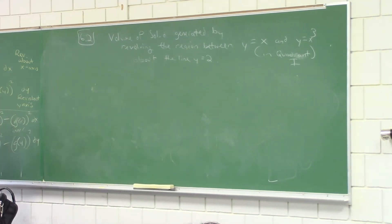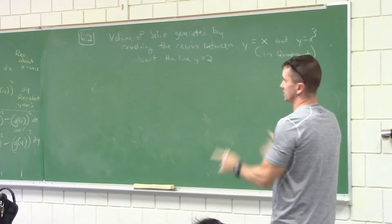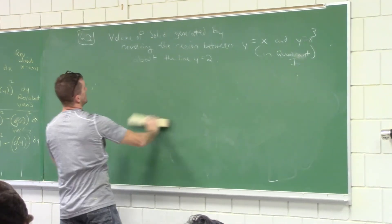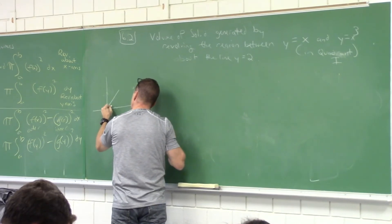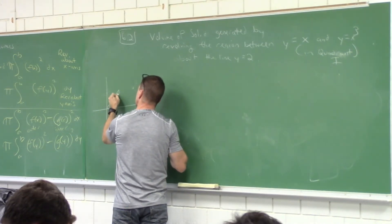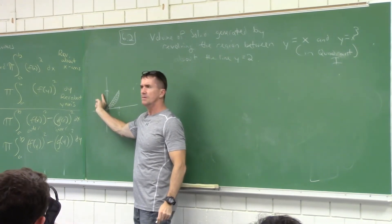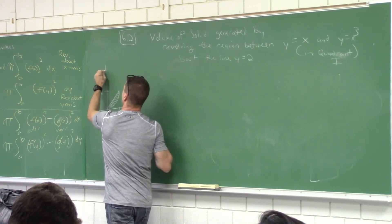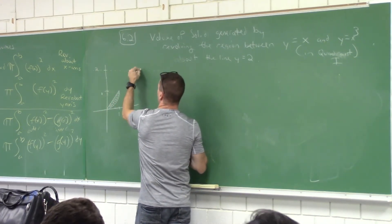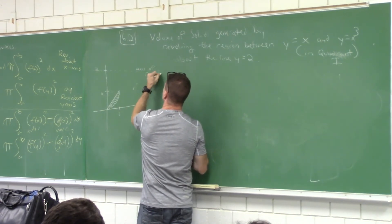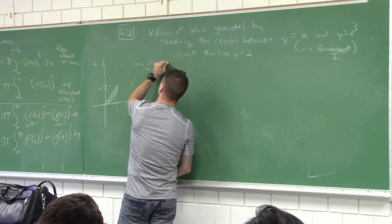We won't solve it, we're going to at least set this up. With technology and CAS-capable calculators, we can compute the definite integral — the setup is what's important. The region between y equals x and y equals x cubed, intersecting at (0,0) and (1,1), revolved around y equals two. That line y equals two is the axis of revolution.